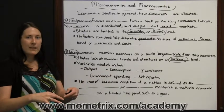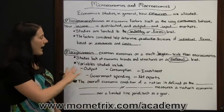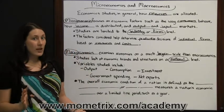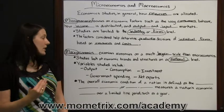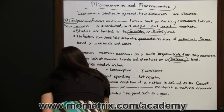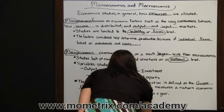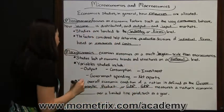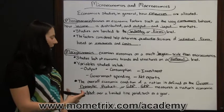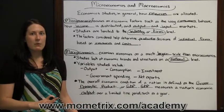We're not just making a profit off of people that live in our country — we're making a profit with money coming in from the outside. We're not looking at very specific things for one industry or company; we're looking at everything as a whole for the whole nation with macroeconomics. The overall economic condition of a nation is defined as the gross domestic product, or GDP. The GDP measures the nation's economic output over a limited time period, such as a year — how much the nation was able to put out over what it was actually taking in.